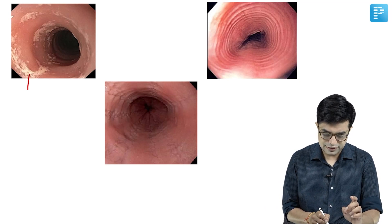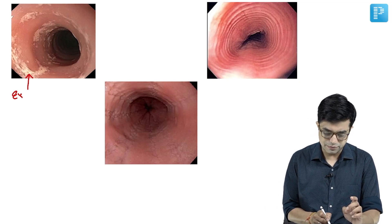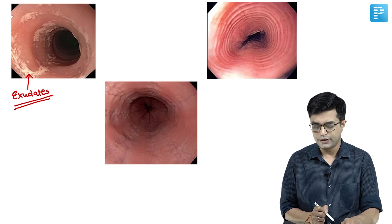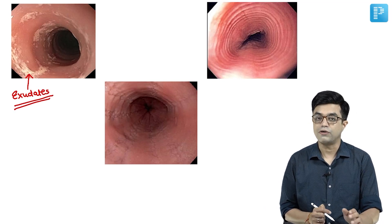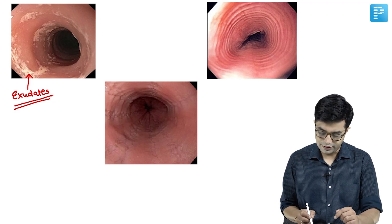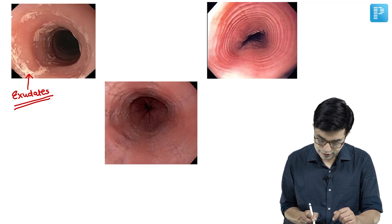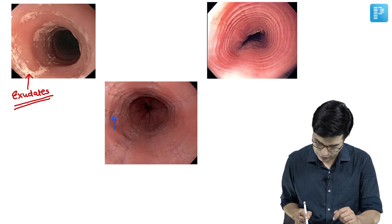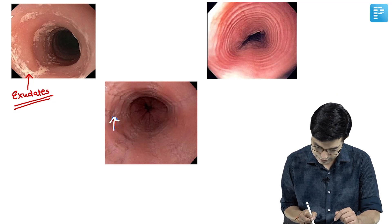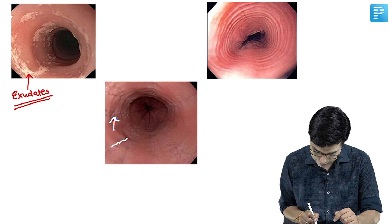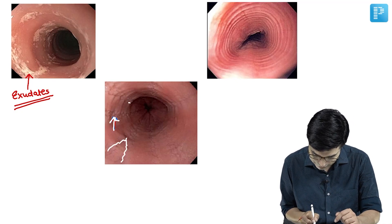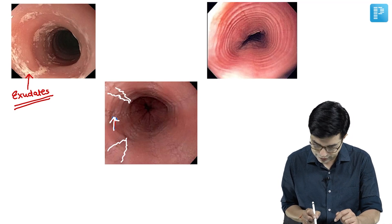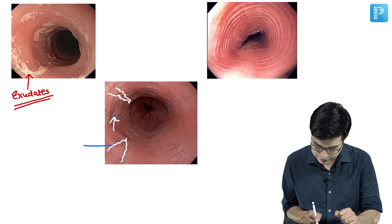The first pattern shows multiple exudates, also called micro-abscesses. The second shows linear furrows. Some rings are also present, but the linear ones are called furrows.